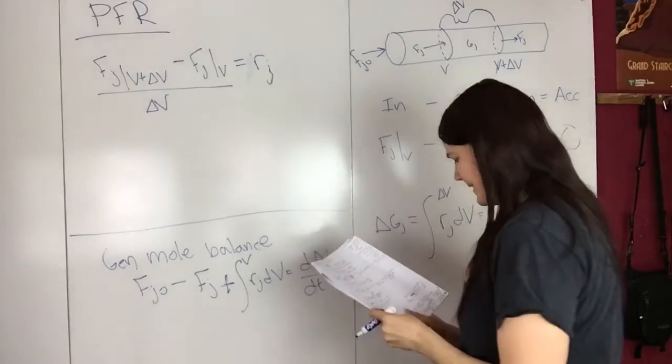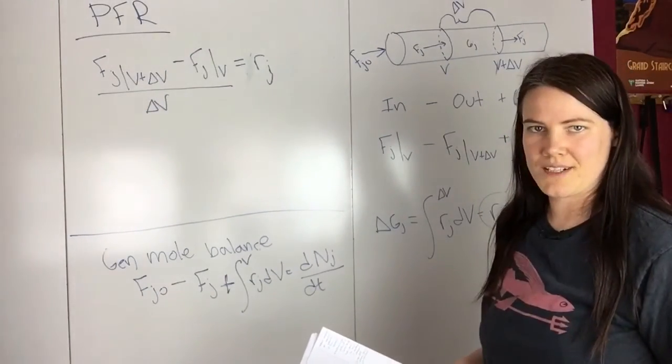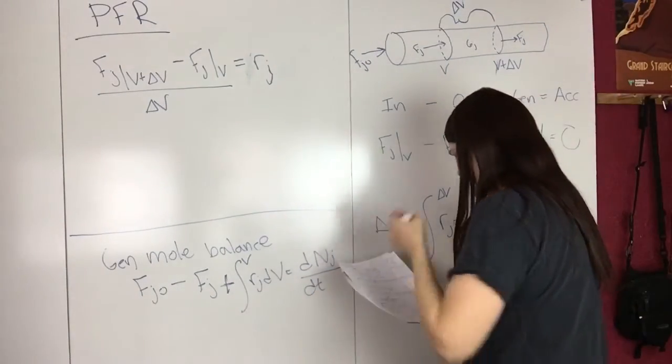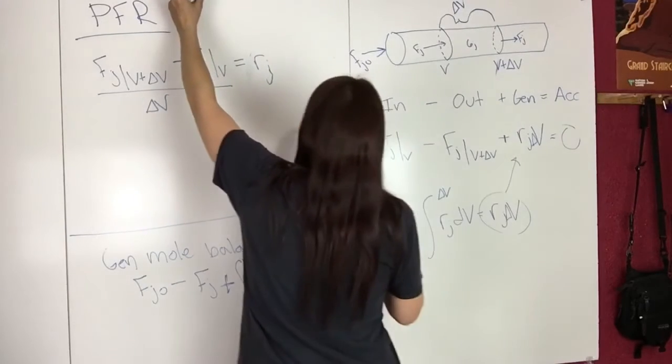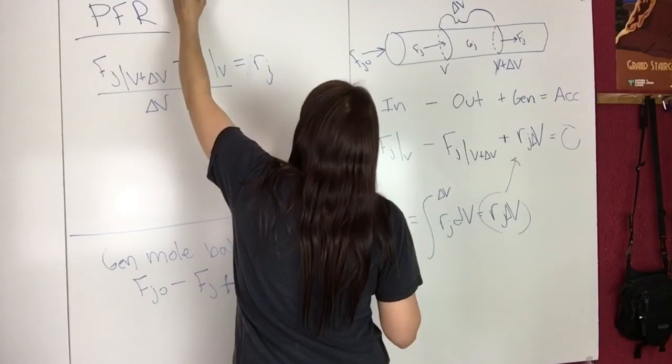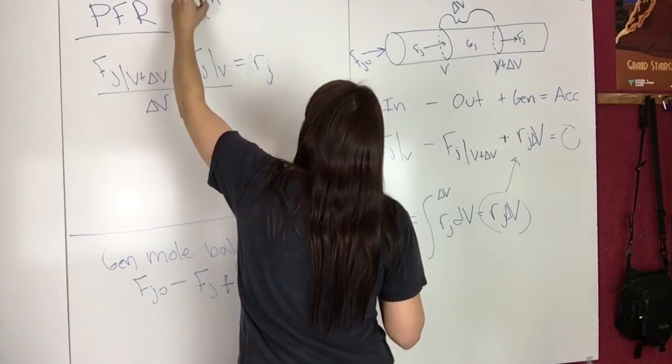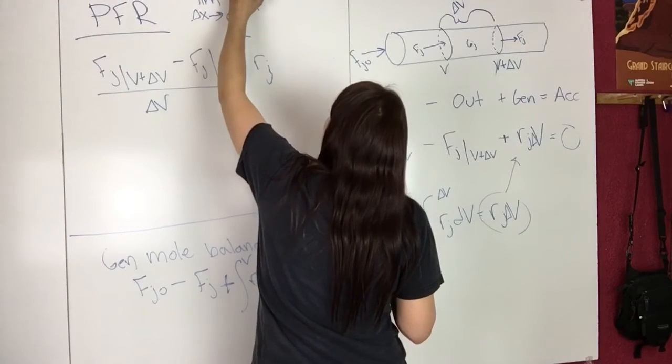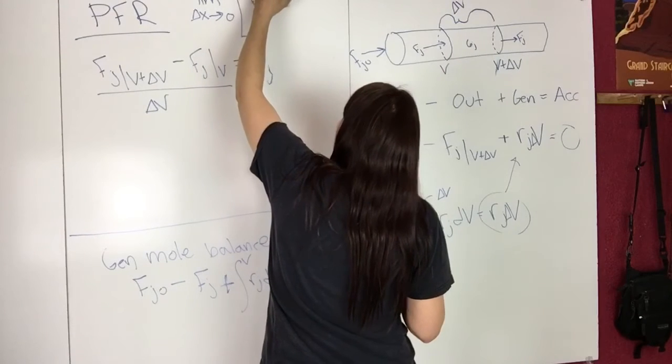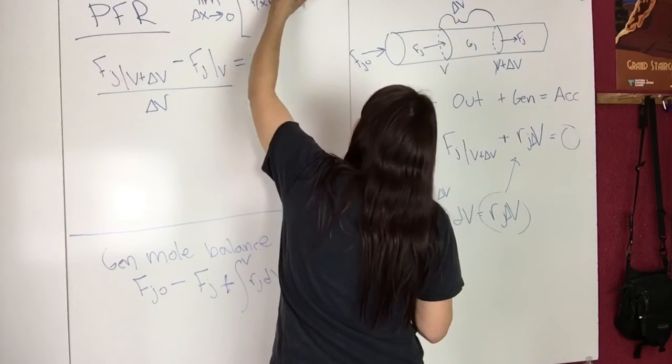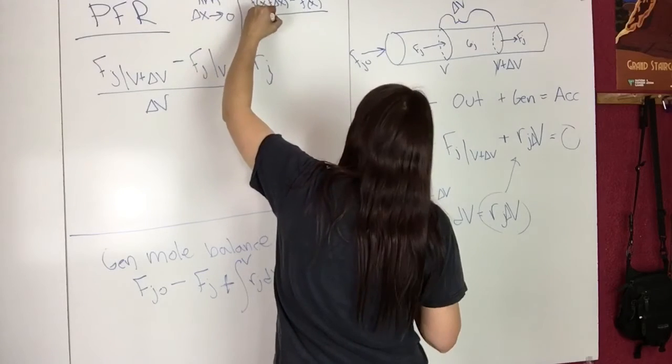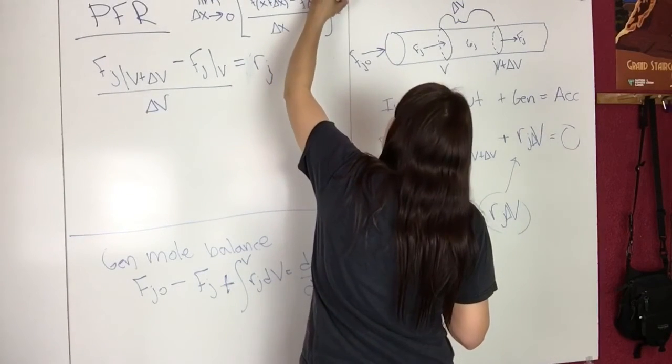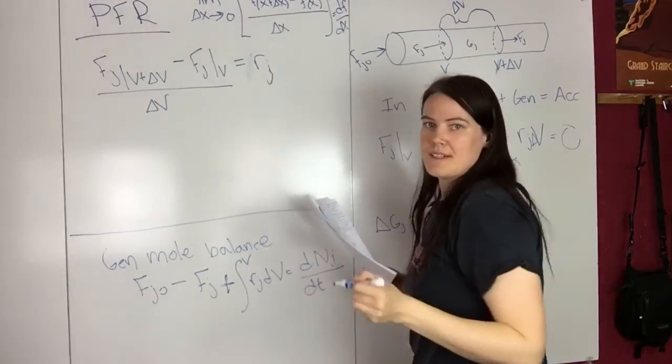If we compare this to the definition of a derivative, the limit as delta X approaches zero of F(X plus delta X) minus F(X) over delta X equals dF/dX.